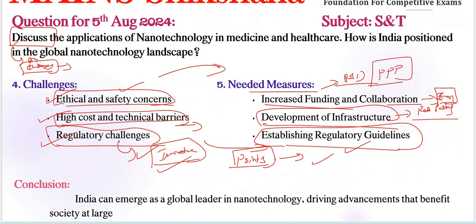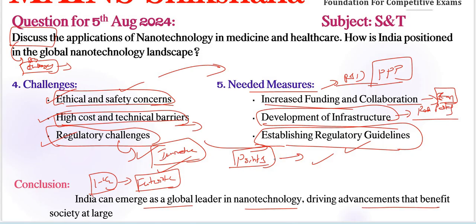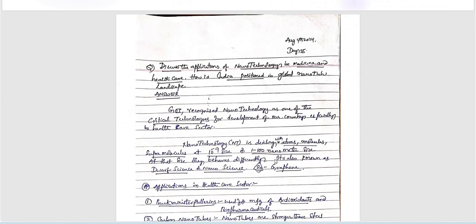Finally, in the conclusion part, we can add one to one-and-a-half lines of a futuristic note. For example: with the right investments in infrastructure, funding, and regulation, India can emerge as a global leader in nanotechnology, driving advancements that benefit society at large. That should be the futuristic note — that is the perfect structure or approach for this question. Now let us check today's answer written by Vidya Sagar.